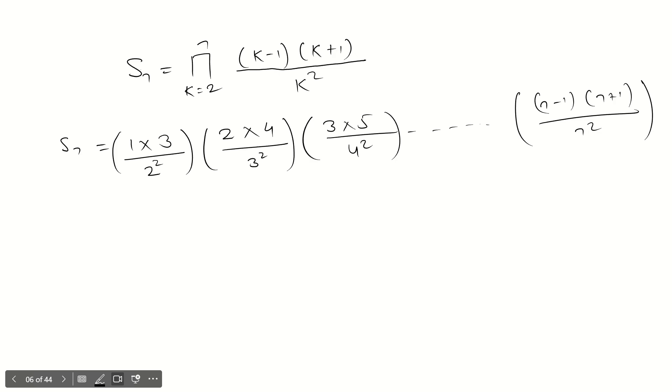Now carefully look, values will be cancelled. Values will cut. Which values will cut? Like here, one 2 will cancel with a 2. Then one 3 will cancel from here. One 4 will cancel from here. So all values will cancel. What will remain? You'll have S_n = 1/2 times (n+1)/n.